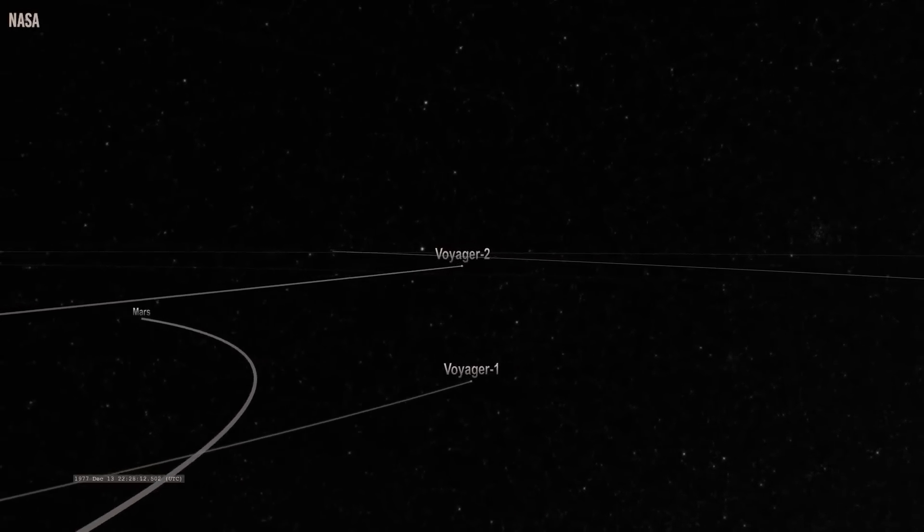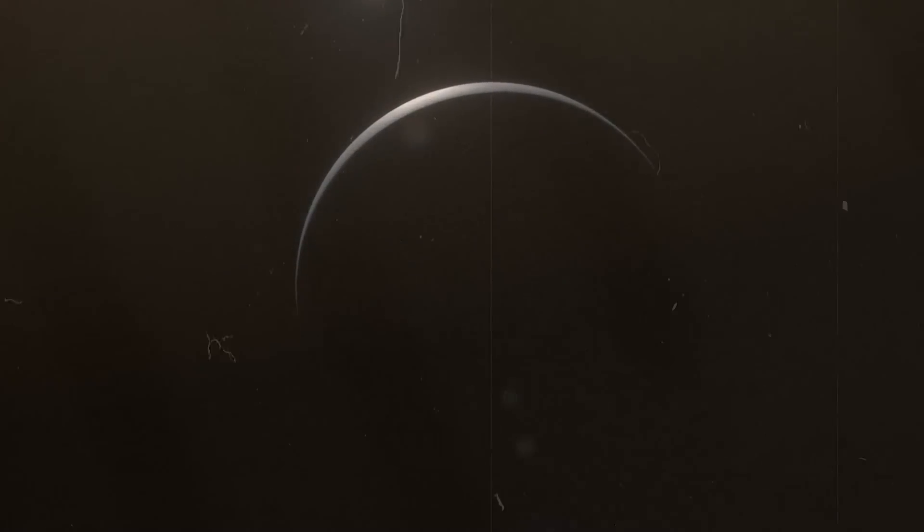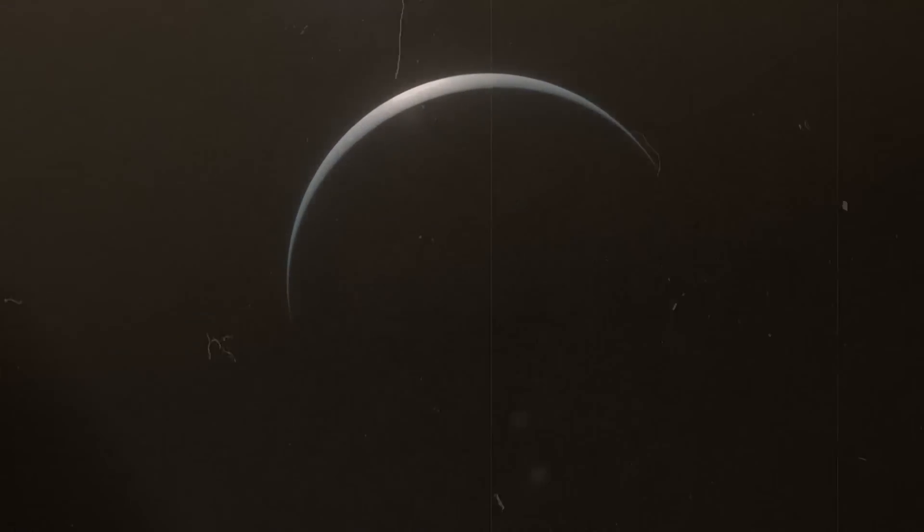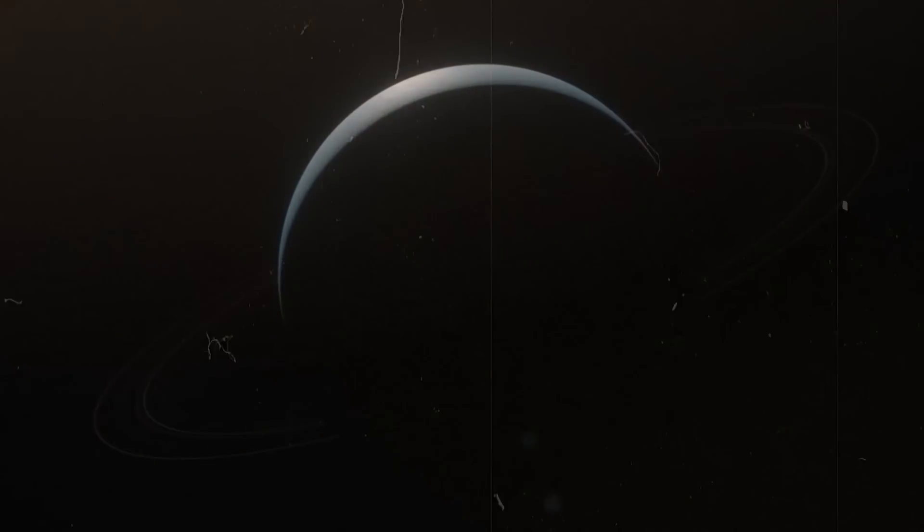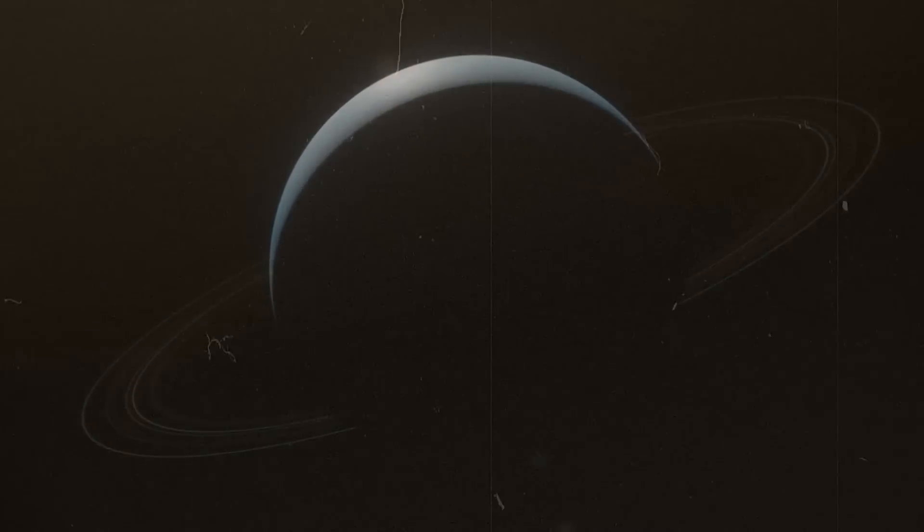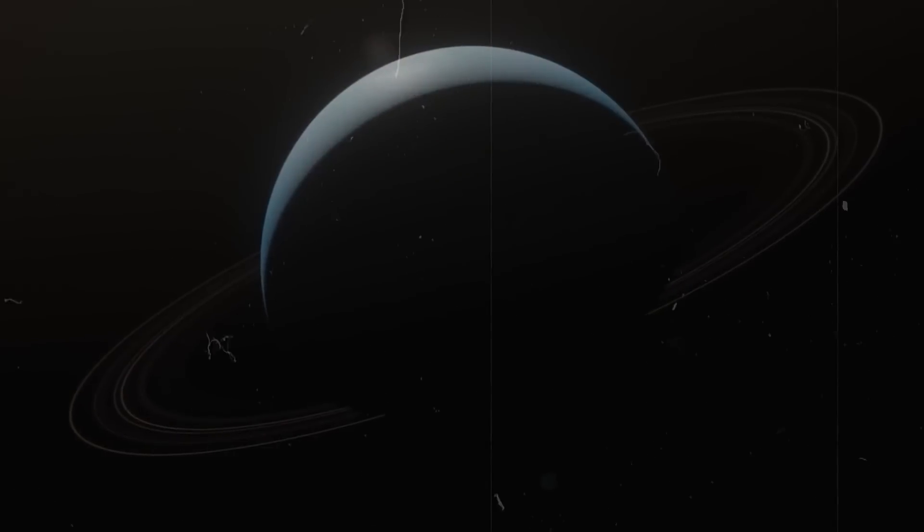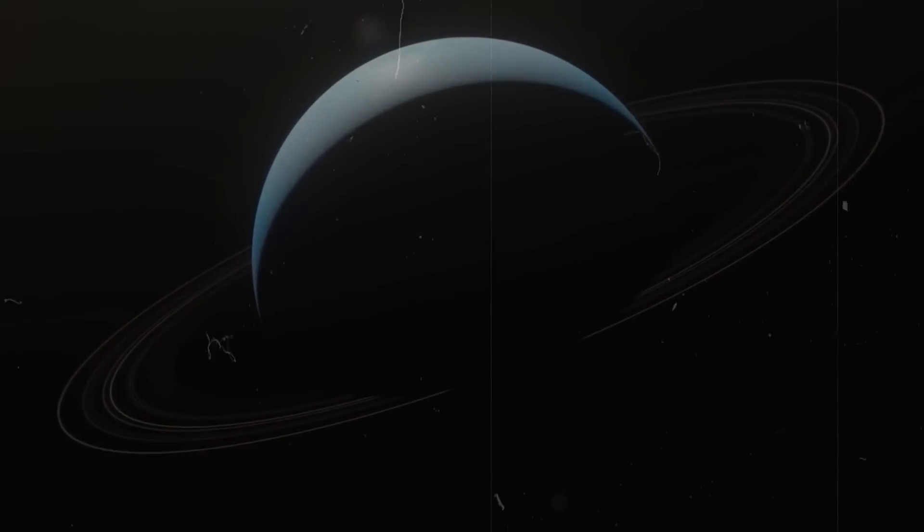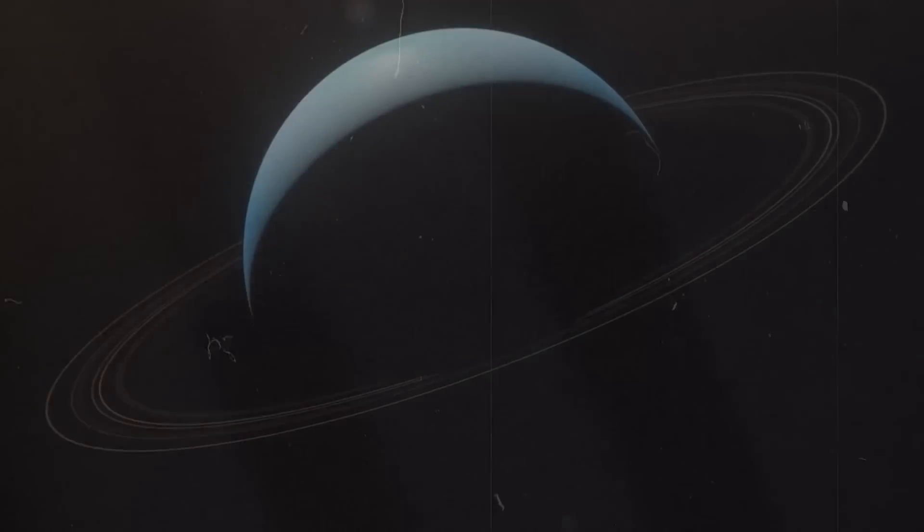Moreover, during these encounters, the gravitational pull of these colossal planets significantly boosted the probes' effective velocity, surpassing what their rocket propulsion could achieve. This concept was relatively new at the time, having been previously attempted only on NASA's pioneer missions to Jupiter and Saturn.